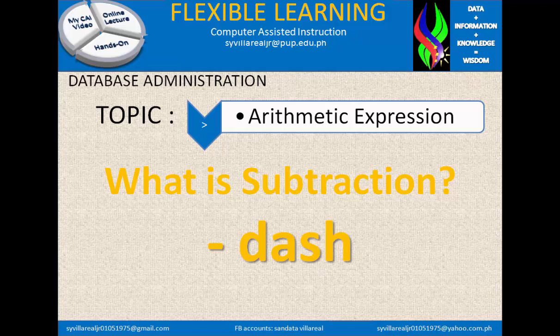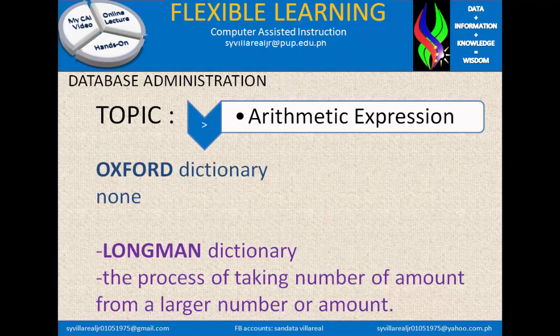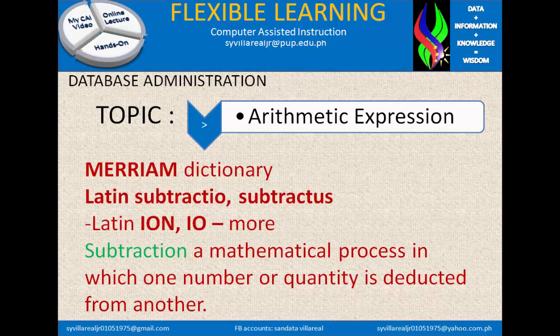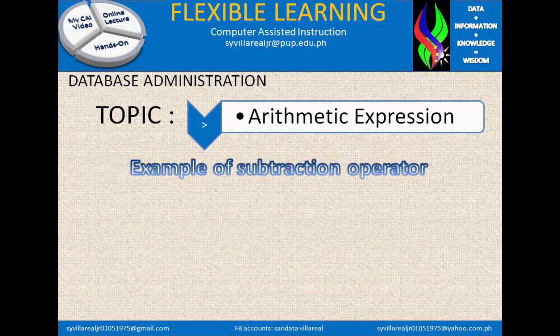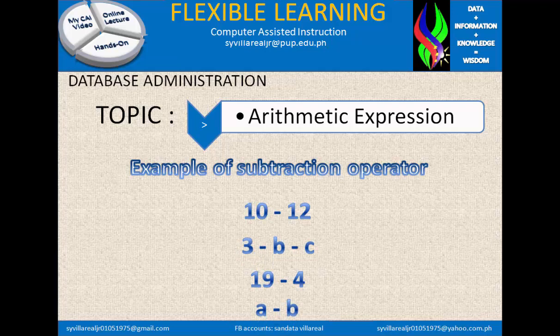Next is subtraction, which uses a dash or minus sign. In the Longman Dictionary, subtraction is the process of taking a number or amount from a larger number or amount. In the Merriam Dictionary, subtraction came from the Latin word 'subtractio'. Subtraction is a mathematical process in which one number or quantity is deducted from another. Note that in addition we seek the sum, while in subtraction we deal with quantity. Examples: 10 - 12, 3 - b - c, 19 - 4, and a - b.